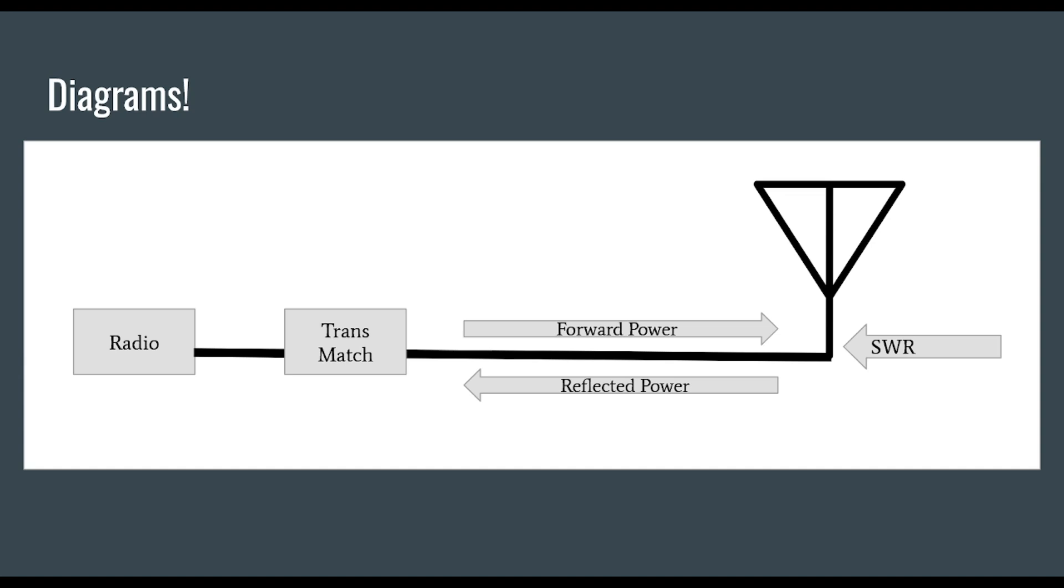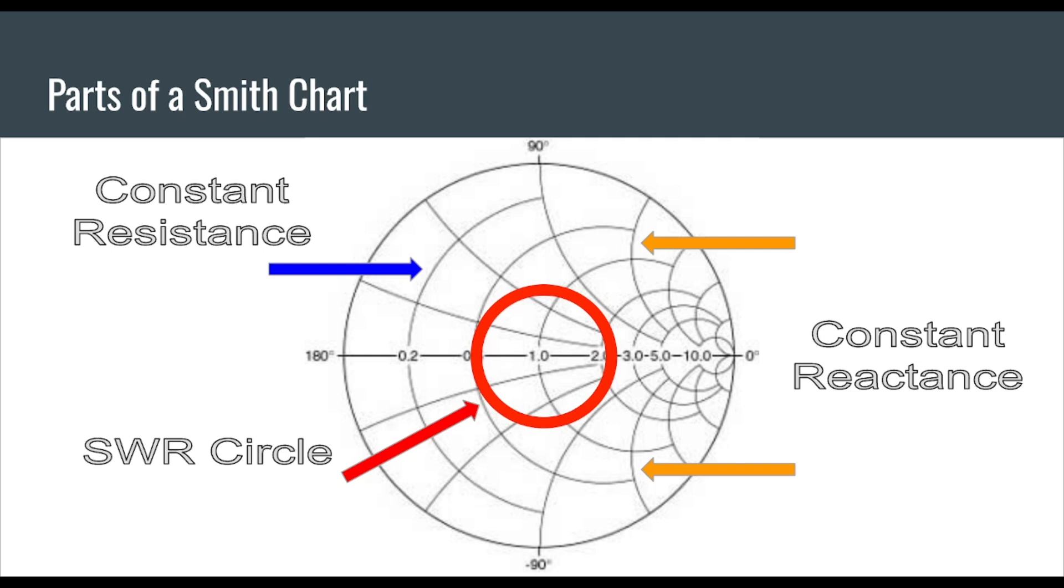Here are some more parts of a Smith Chart. I have an arrow in blue pointing to what appears to be a circle or a semicircle and that's called a circle of constant resistance. They start over on the right hand side of our Smith Chart and get bigger as they move to the left. Anywhere along that circle is going to have the same resistance. We use these to plot the coordinates of our complex impedance on our Smith Chart.